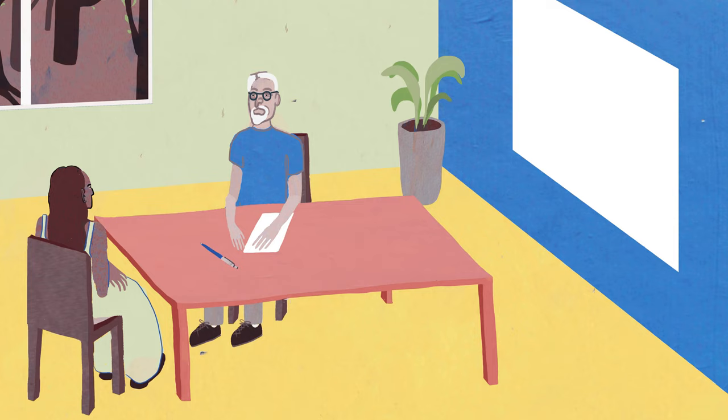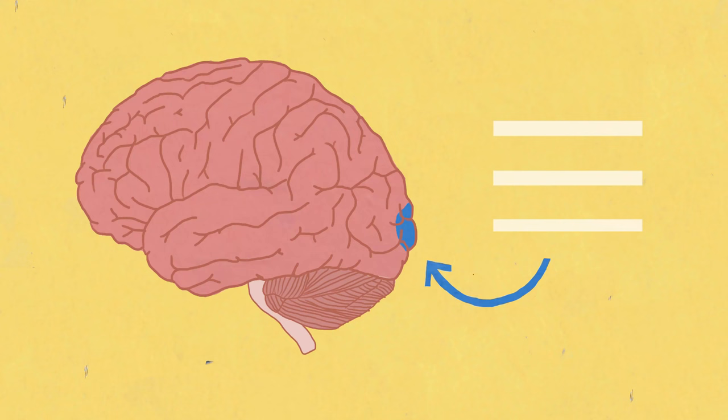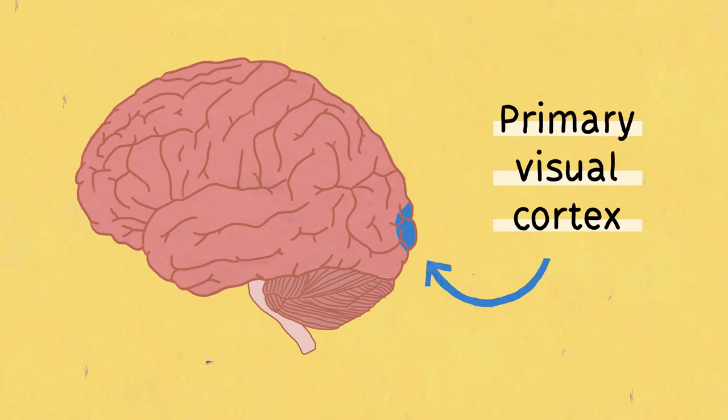In 1974, Lawrence Weisskrantz, a psychologist, examined his patients who had suffered brain damage to their primary visual cortex. Though their eyes could still process visual information, their primary visual cortex could not, leaving them blind.